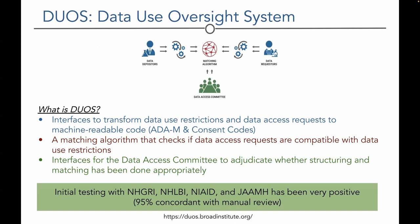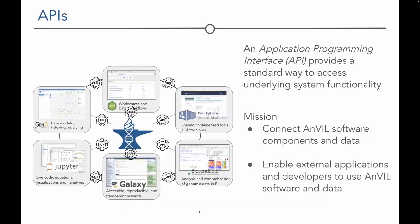The DUOS (Data Use Oversight System) is a computerized automation of the data access request process. A matching algorithm matches data requesters to the requirements around data depositors' data, allowing data access committees to process requests much more efficiently by employing a matching algorithm that works on top of a Data Use Ontology. More details are available on the DUOS for Institute website.